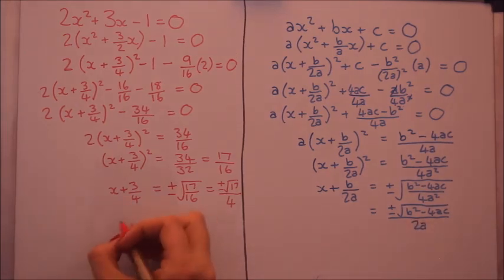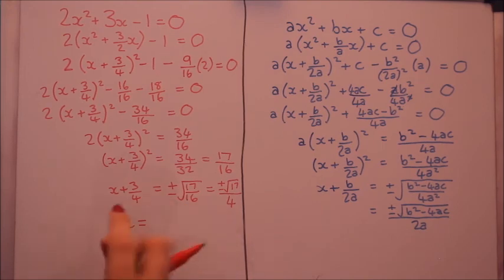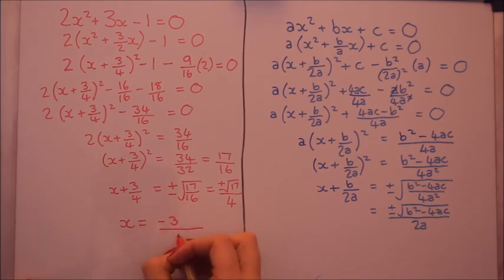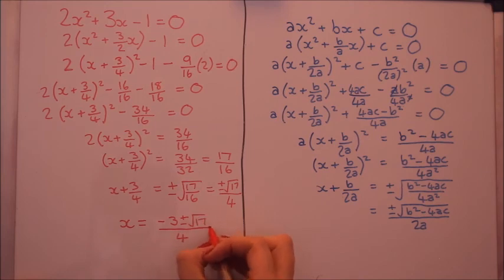Okay, last step is getting rid of the 3 quarters by taking it away. So we'll have a negative 3 quarters on this side. It's all the same denominator, so we'll just put it there. And we've got the plus minus root 17. Same thing on this side.